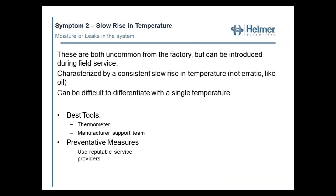Moisture or leaks in the system are uncommon from the factory but can be introduced primarily during field service — particularly from using gauges and manifolds on the system, which introduce contaminants. Moisture is the biggest contaminant you'll find in a ULT. ULTs are typically operating in a vacuum, so any leak or dirty hoses will pull contaminants in. This is characterized primarily by a consistent slow rise in temperature — not erratic like oil logging, but a steady, even rising pattern. The cycle rates will also disappear in your graphing.